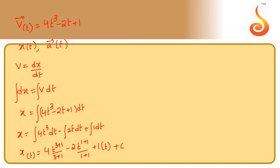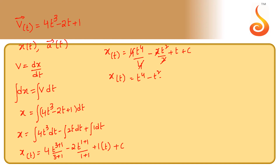Therefore, position as a function of time equals 4t⁴/4 minus 2t²/2 plus t plus c. The 4s and 2s cancel, so position as a function of time simplifies to t⁴ minus t² plus t plus c.